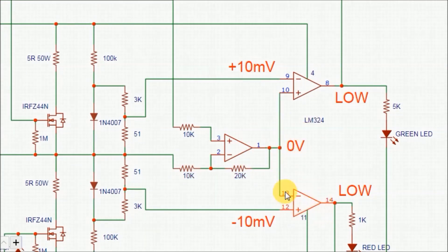In that case, the voltage of this op-amp will be low because the voltage of the inverting input, which is zero volts, is higher than the voltage of the non-inverting input, which is minus 10 millivolts. The output voltage of the second op-amp will be low as well because of the same reason.